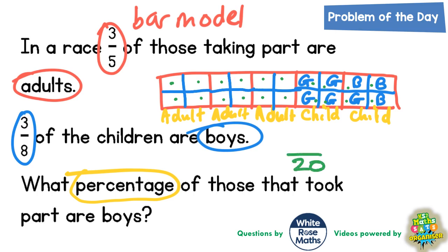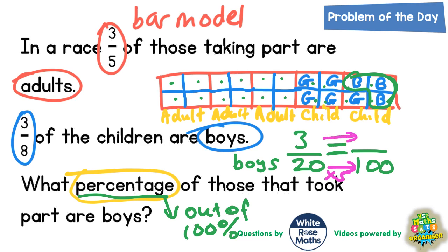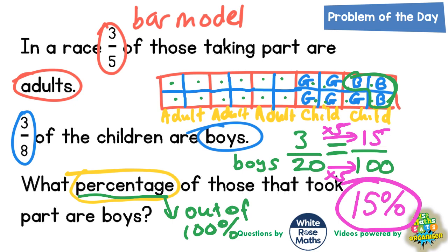So out of the 20 sections, three of them are boys — these three on the end. So that's three out of 20 are boys. We're being asked what that is as a percentage. Percentage is out of 100, so if we make an equivalent fraction: 3/20 equals something out of 100. To get from 20 to 100 we multiply by 5, so we multiply the 3 by 5 as well. 3 times 5 is 15, so that's 15 out of 100 — which is 15%. Our final answer: what percentage of those that took part are boys is 15%.